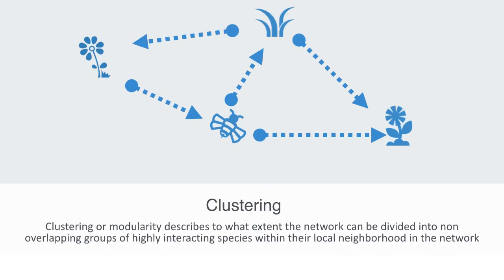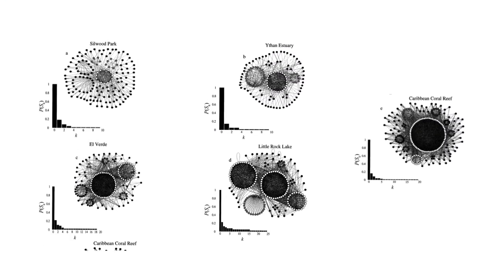This illustration of food webs across a number of different ecosystems illustrates prominent clustering. The food web structure and sub-web frequency distribution for several ecosystems is shown — including a park, estuary, lake, and coral reef — all exhibiting a high clustering coefficient.